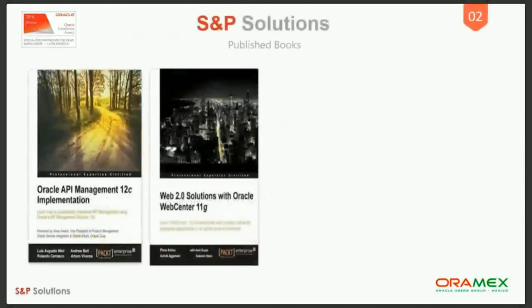This is part of my profile and my work. I wrote the Oracle API Management 12c Implementation book — the one on the left — back in 2015, with other colleagues. We started writing it around January 2015, and by August we had finalized it. It was published in October. So it was a great year for me in 2015.